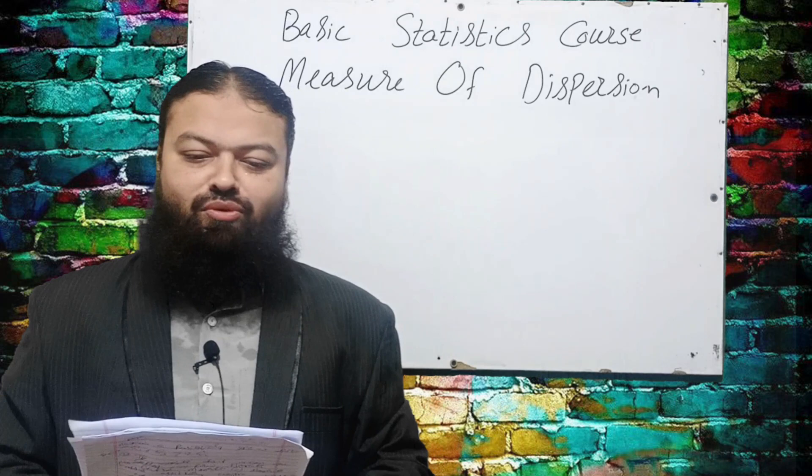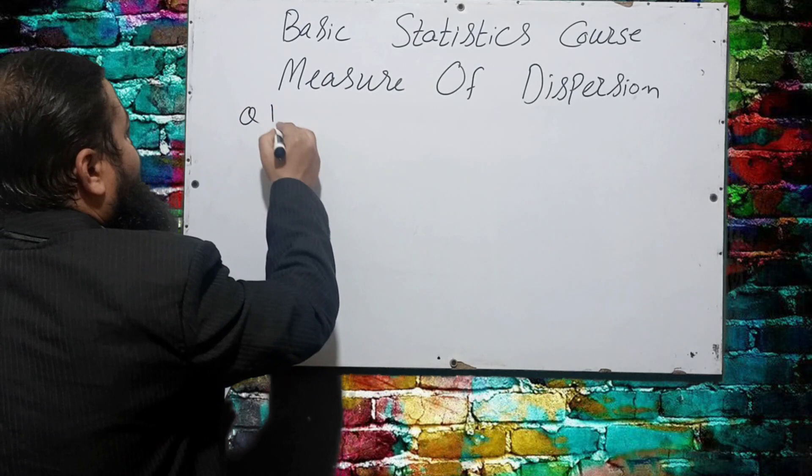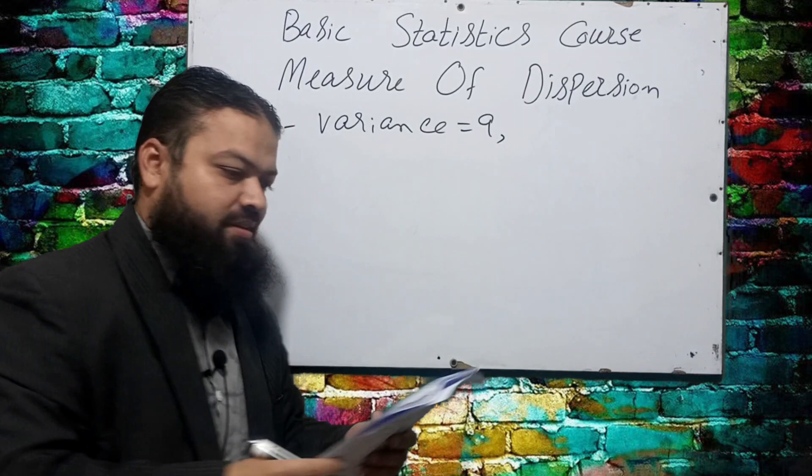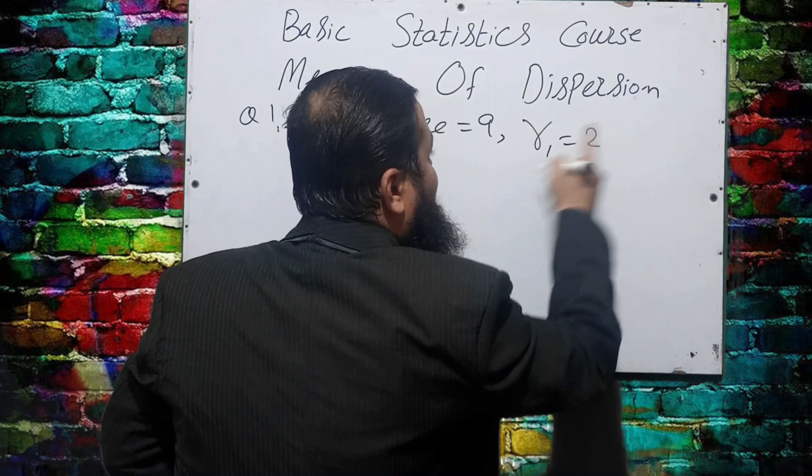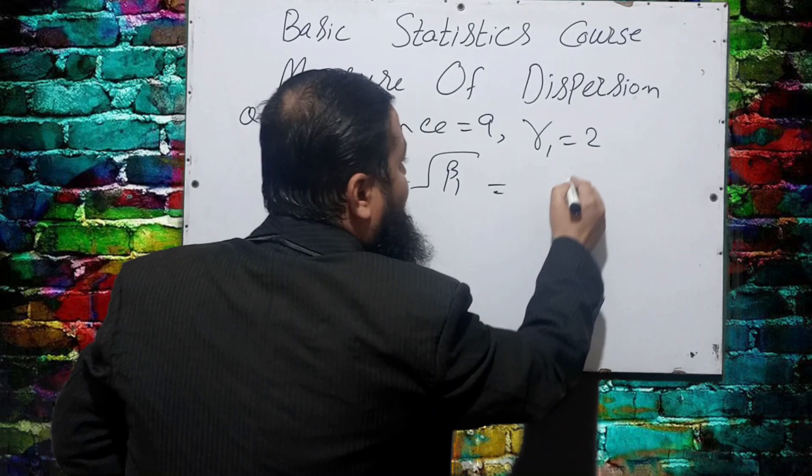Let's start. Question number one: a distribution has variance equal to 9, and γ₁ is equal to 2. What is γ₁? γ₁ is actually equal to √β₁, where β₁ is μ₃² over μ₂³. Taking the square root gives us γ₁ = μ₃ / μ₂^(3/2).